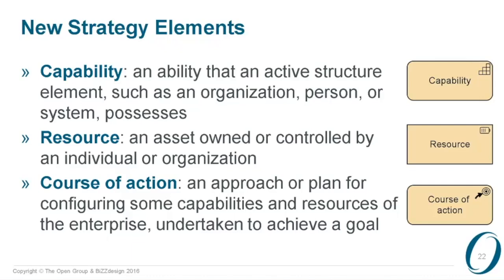Capabilities are more about potential and planning, while business functions are more about the current reality and are tied closer to the organization structure. We also have a high-level concept of resource — a resource can be anything, an asset that can be used to support these capabilities. A resource can be money, or knowledge or skills, which are implemented by the actors in your organization. For example, a certain skill can be realized by an actor.